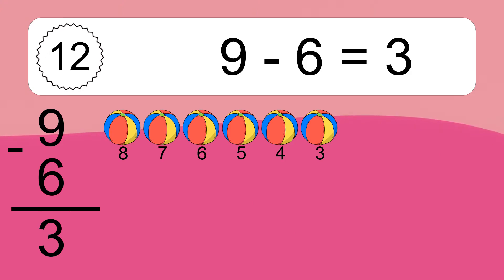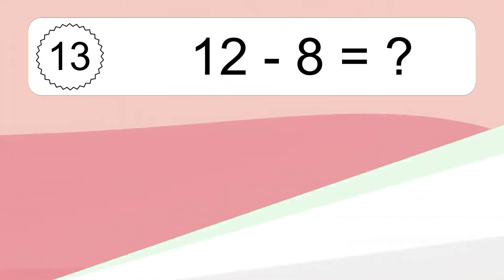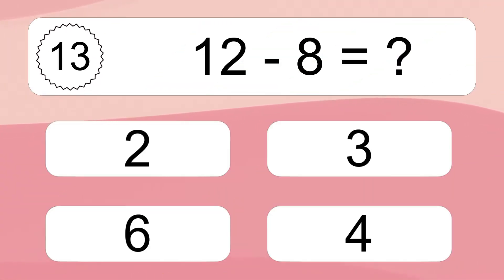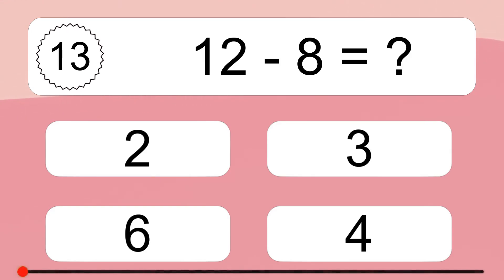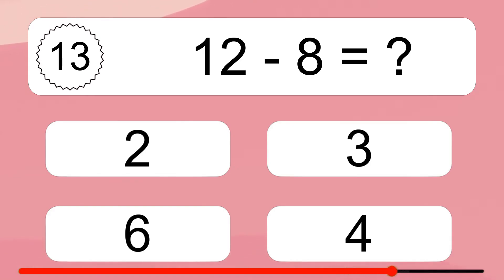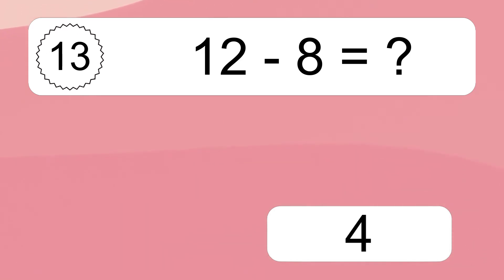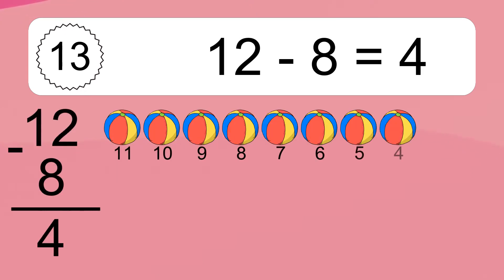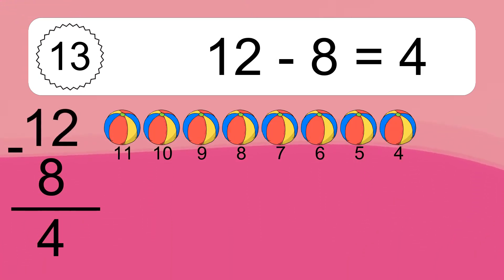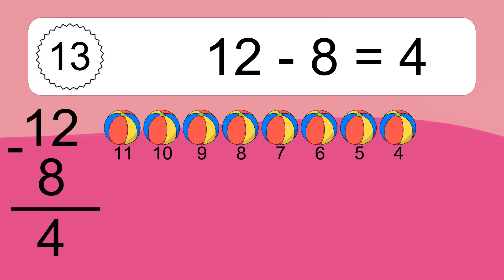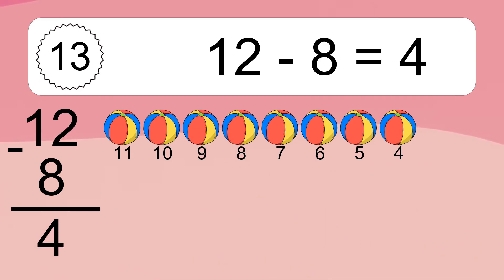12 minus 8 equals what? 12 minus 8 equals 4. Let's count it: 11, 10, 9, 8, 7, 6, 5, 4.